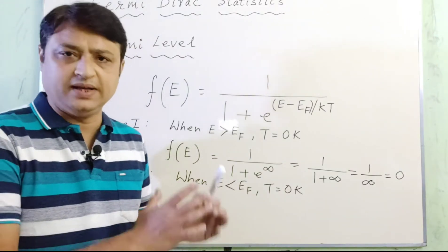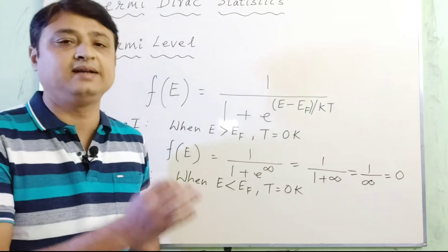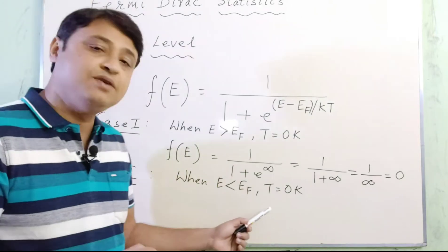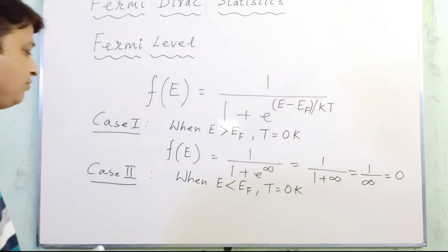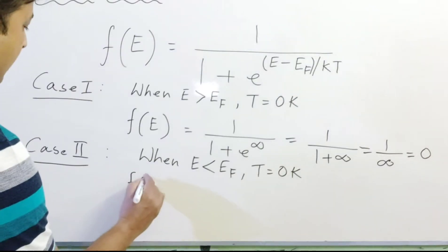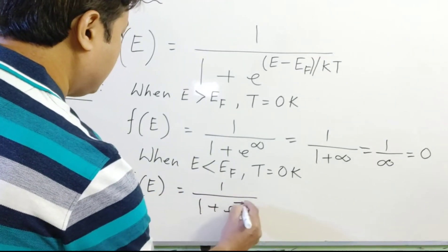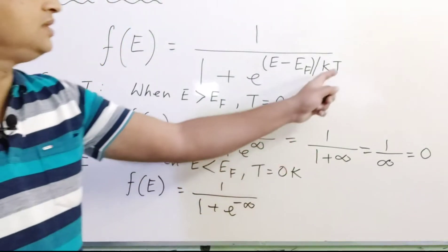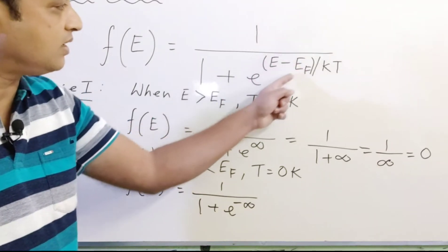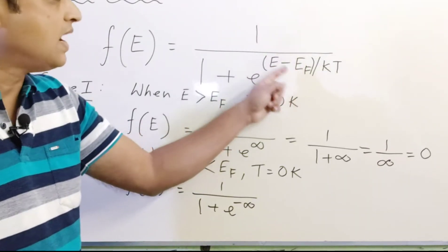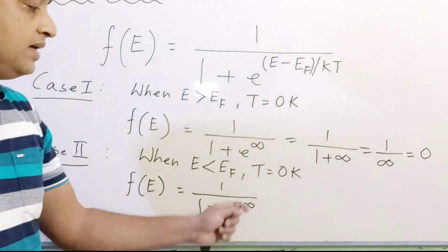Case 2: when E is less than Ef. Here the energy level E is below the Fermi level energy, and again we consider T = 0 Kelvin. The value of f(E) will be 1 / (1 + e^(−∞)), because T = 0 and E < Ef makes the numerator (E − Ef) a negative value, and a negative value divided by zero gives e^(−∞).